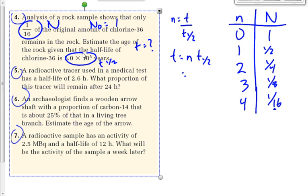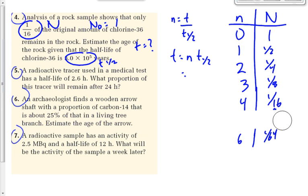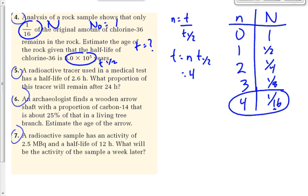Somebody this morning during scheduled help asked, 'Why do I know when to stop?' We stop when big N reaches the final amount we want — 1/16th. That means little n equals 4. So we multiply 4 times the half-life, 3×10⁵ years. That gives us 1.2×10⁶ years.